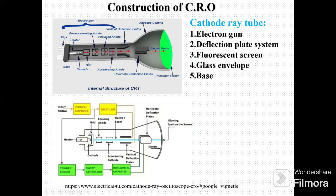Now this is the block diagram of CRO. We have seen this is the CRT. Here a vertical amplifier is there, where the input signal is fed, delayed line, and here the trigger circuit, sweep generator, and horizontal amplifier.